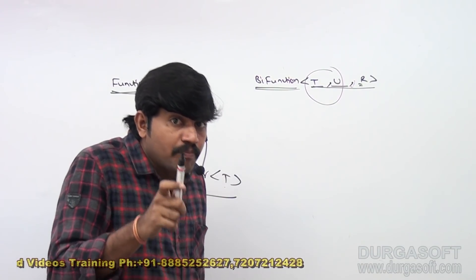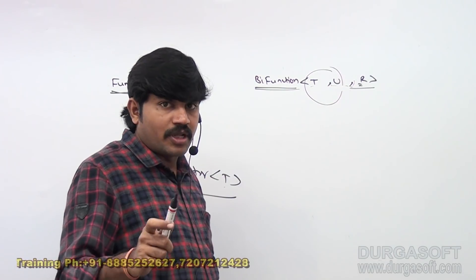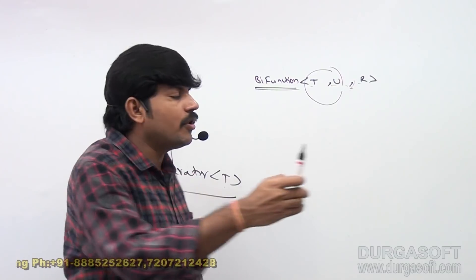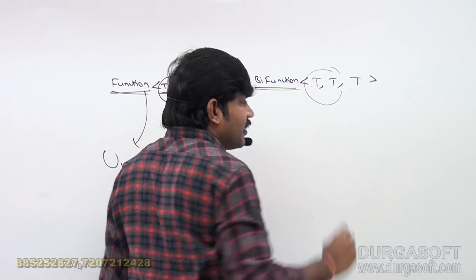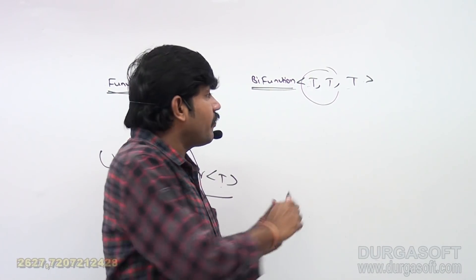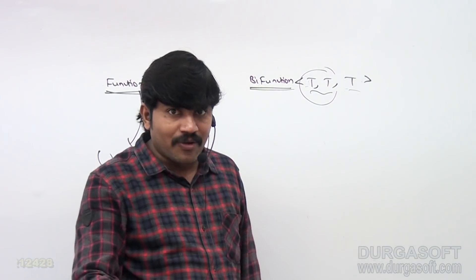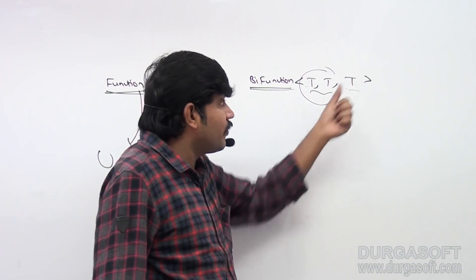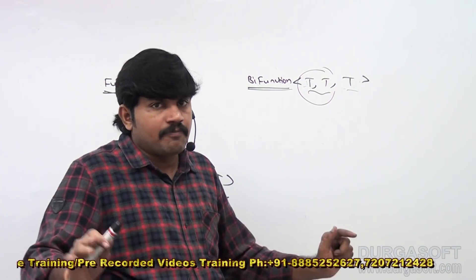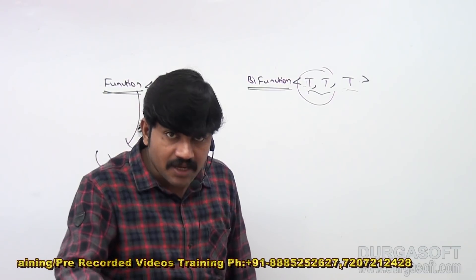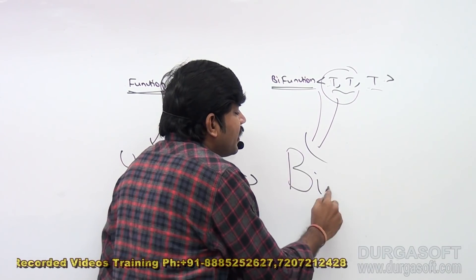But for bifunction — how many input arguments? Two input arguments, and the return type is only one. If all three things are the same type — for example, if I provide two string values and want to perform concatenation, the result is also a string. When all three type parameters are the same, we should go for binary operator.